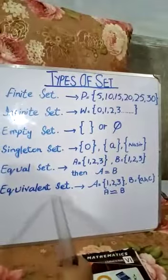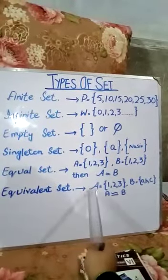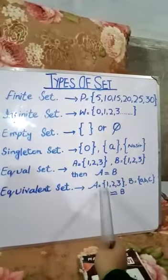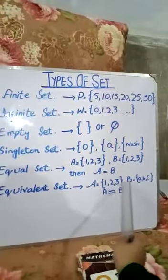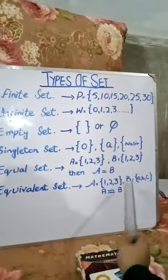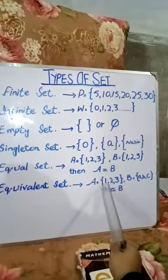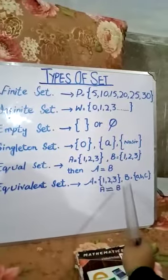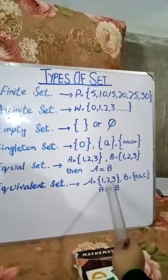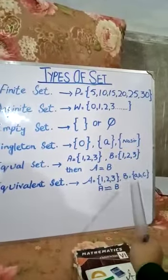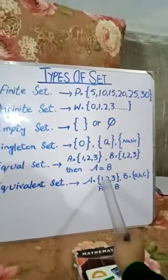Now, number 6 — equivalent set. Two sets have the same number of elements but not necessarily the same members; such sets are called equivalent sets. For example, A = {1, 2, 3} and B = {A, B, C}. A is equivalent to B because the number of elements are equal.